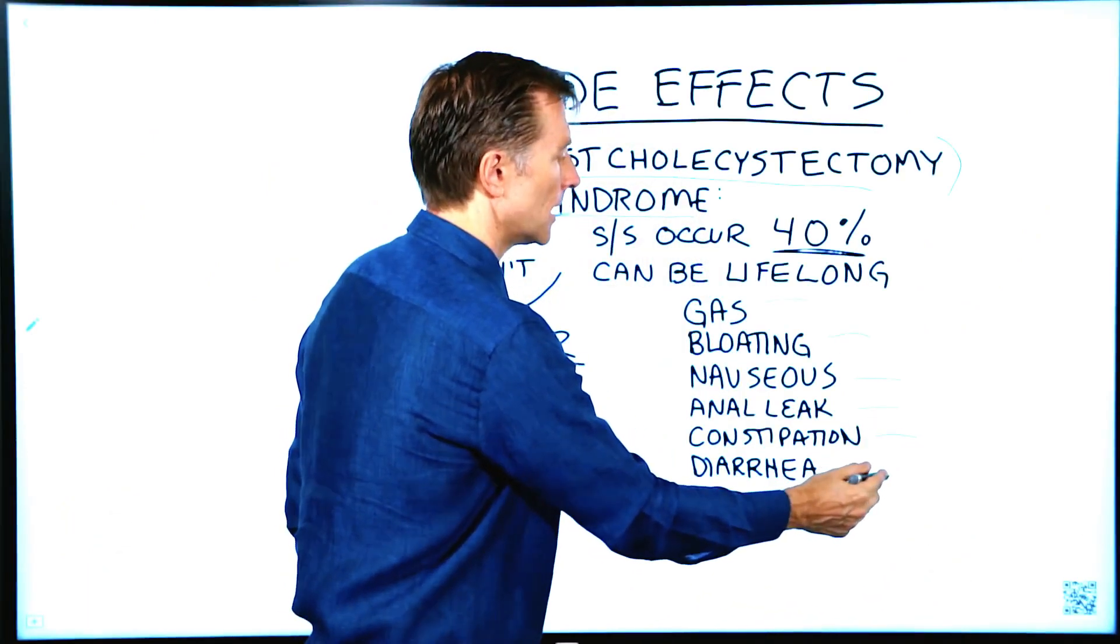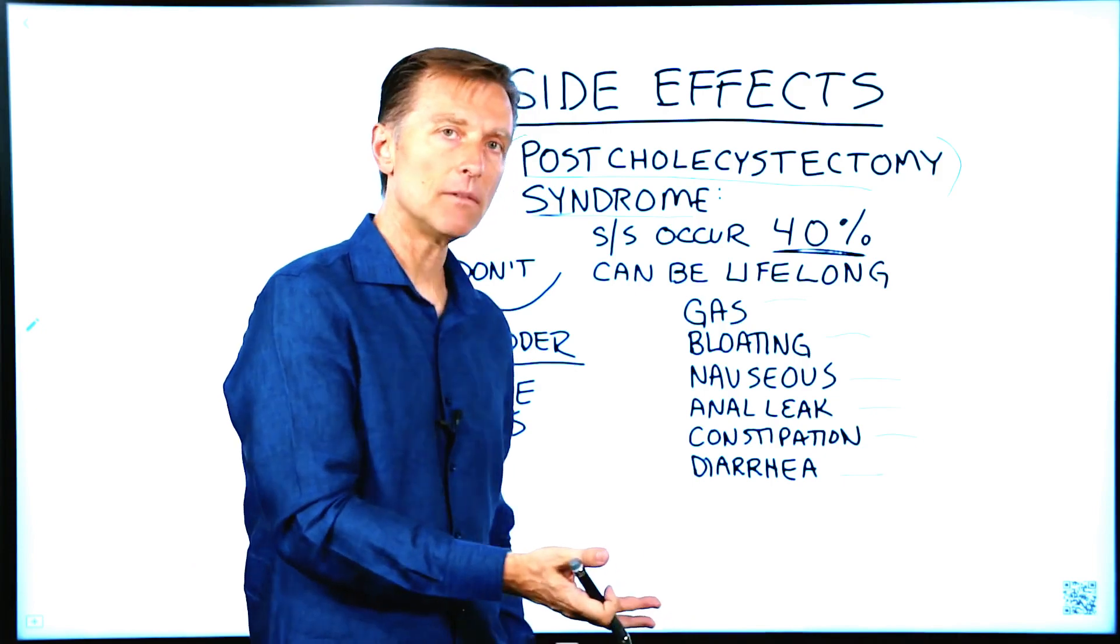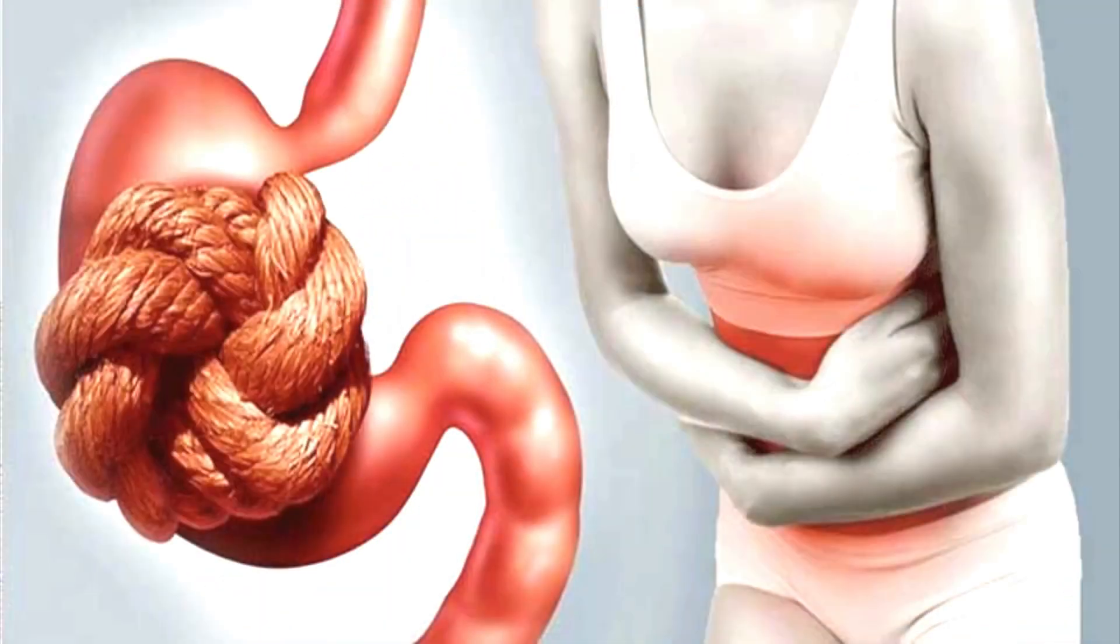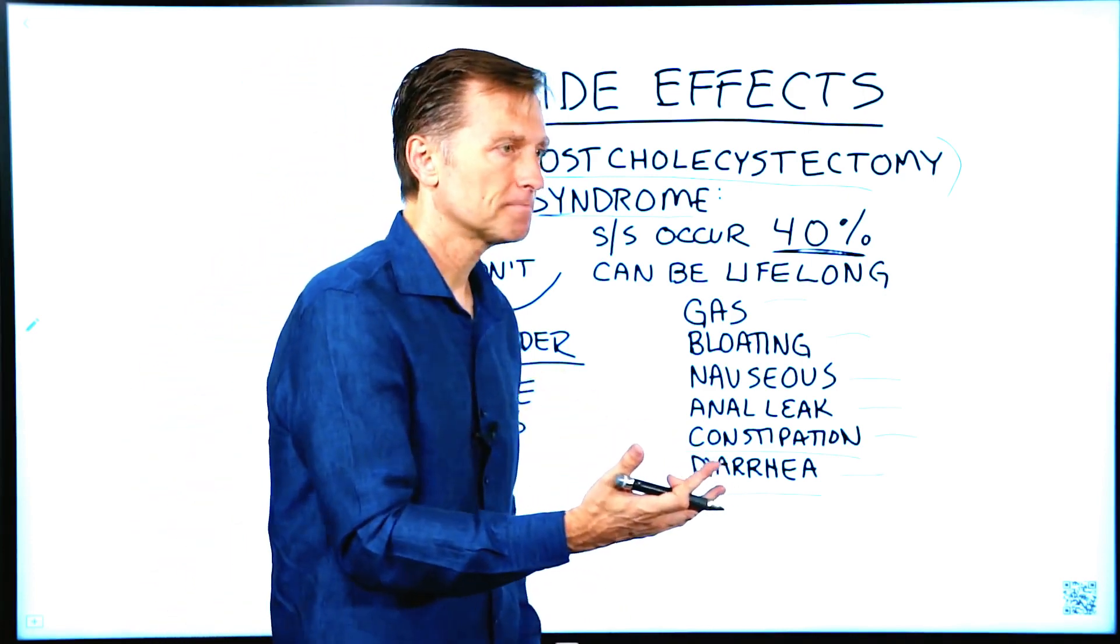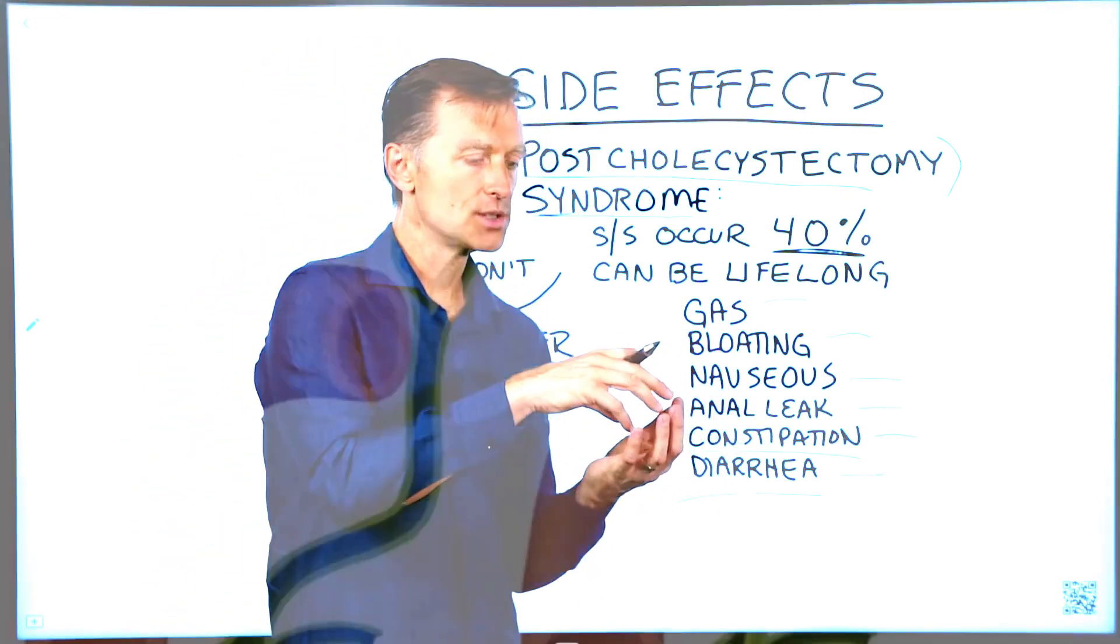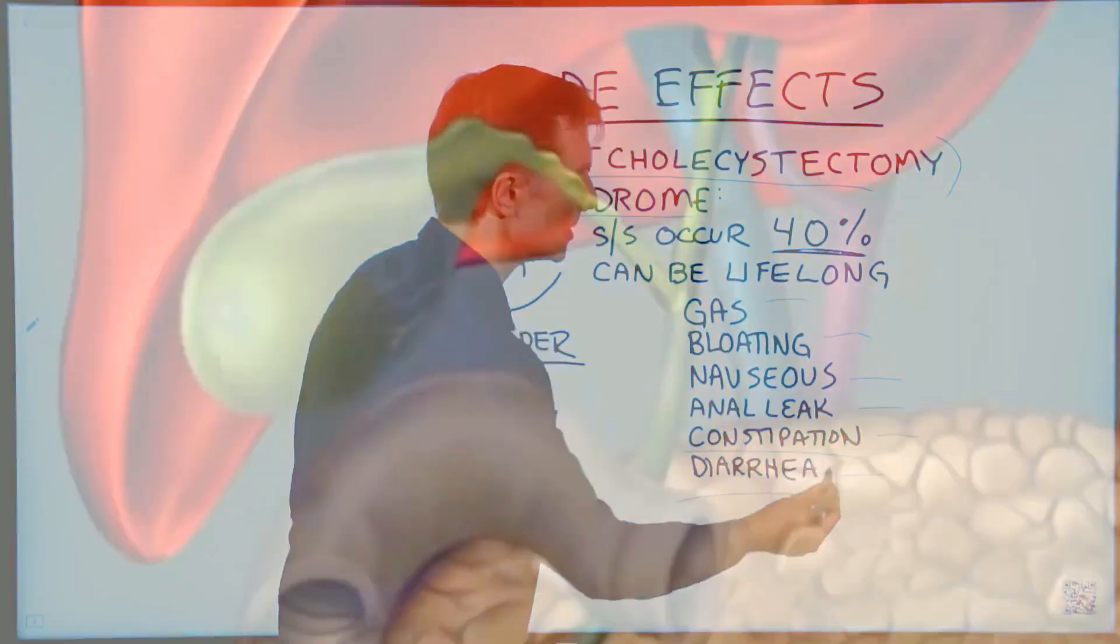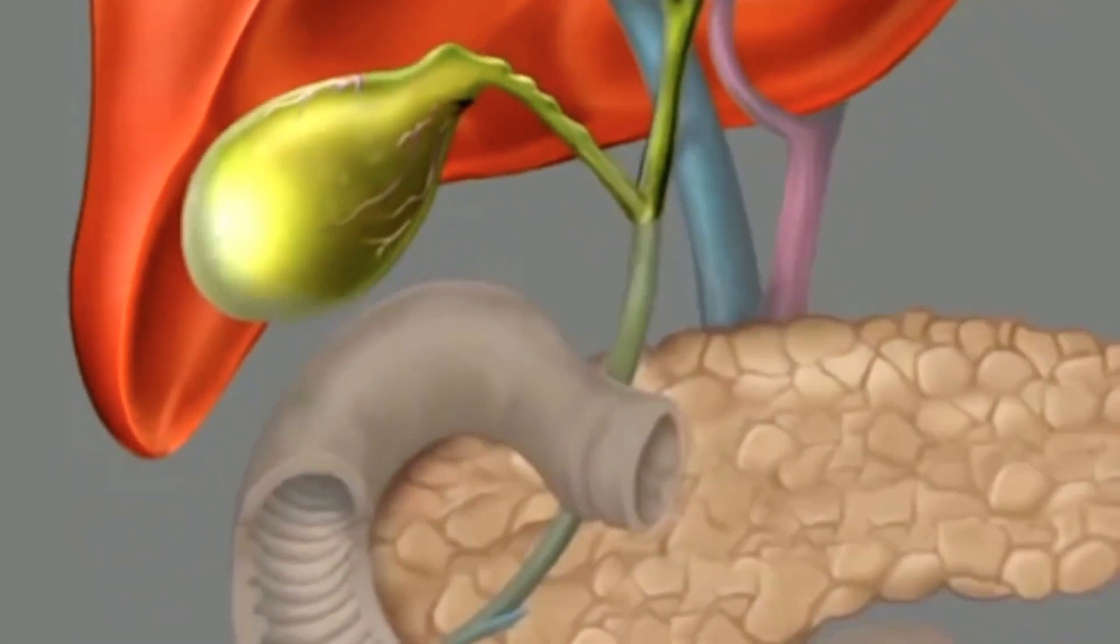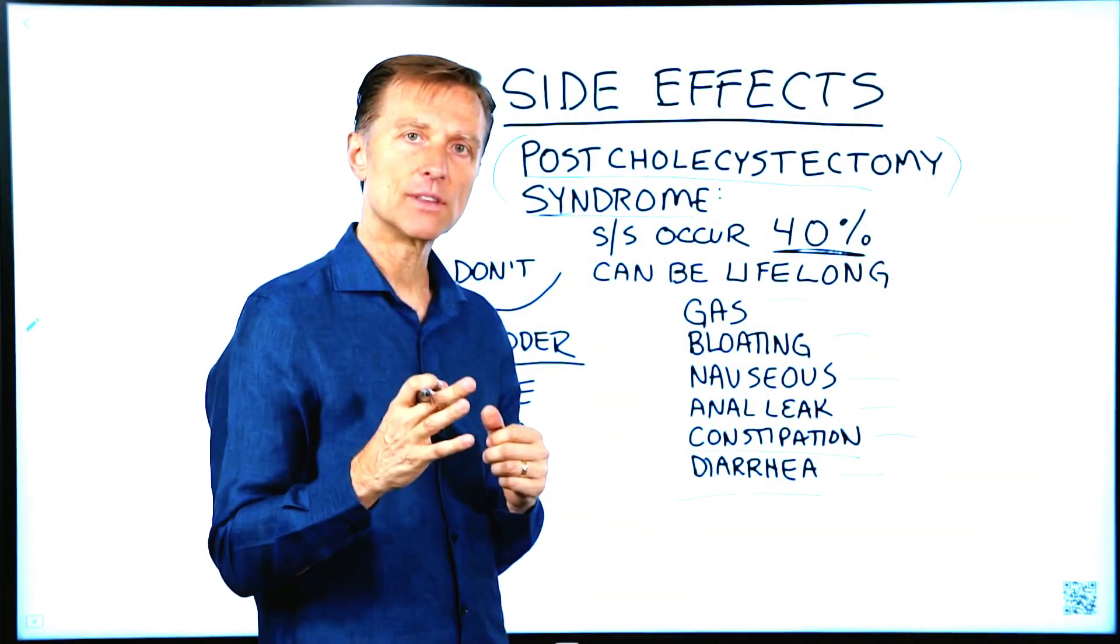Gas, bloating, nausea, anal leakage, constipation, diarrhea. Bile salts, which are concentrated in the gallbladder, actually help move things to your colon. So if you're deficient in bile, you're going to have more constipation. If you have too much bile, you're going to have diarrhea. So what happens is maybe they took out the valve and it's just draining too much and then you're getting too much bile. Or in another situation, because you don't have the sac that holds and stores and concentrates the bile, then what happens is you're going to be bile deficient and you'll have more constipation because the gallbladder actually concentrates the bile up to 20 times. So it's super concentrated.